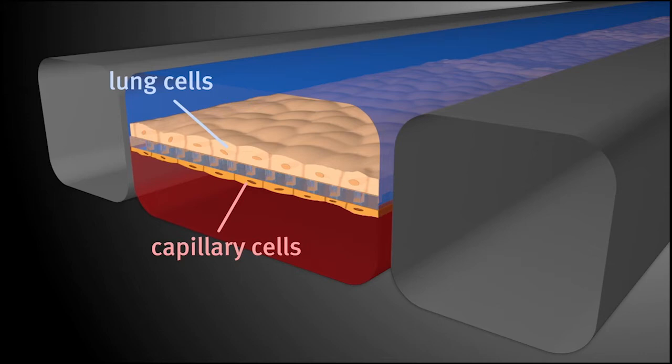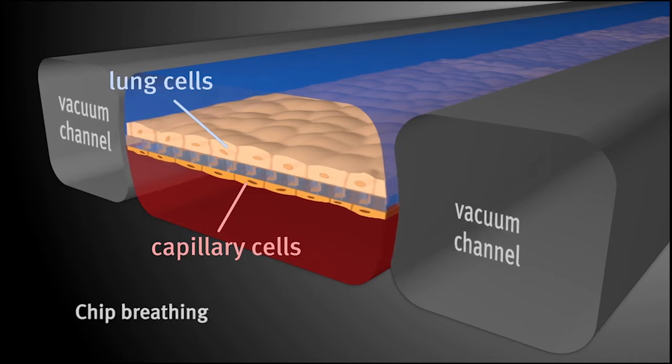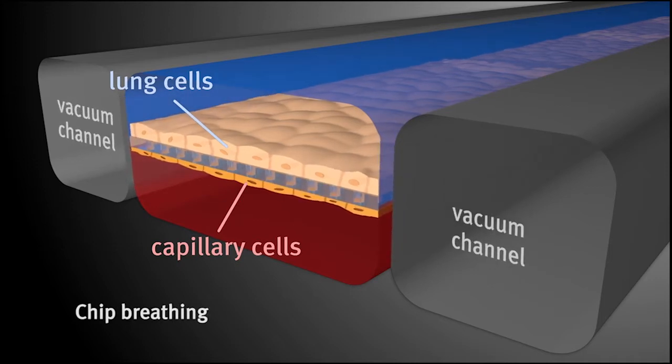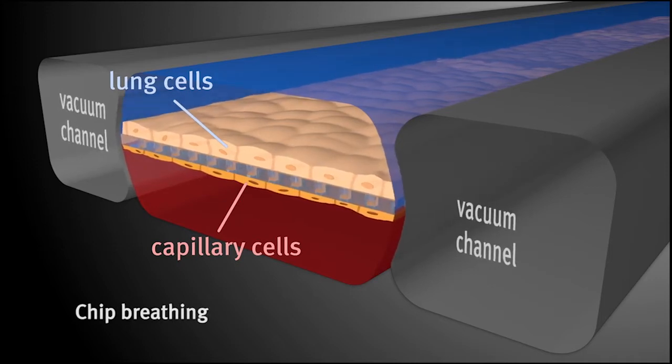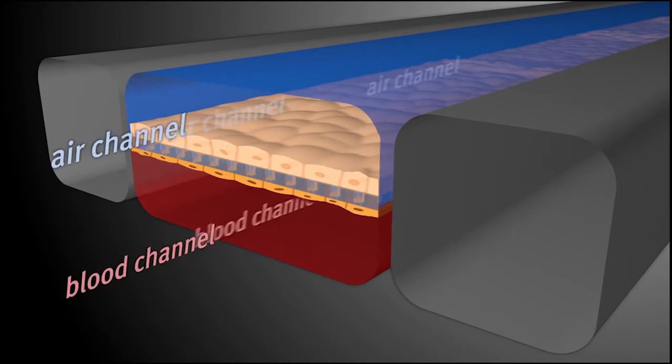Second, add fillings involved in the organ's function such as nutrients and oxygen. Finally, add mechanical forces such as breathing or the motion of the gut in the same proportions as those occurring in the actual organ.